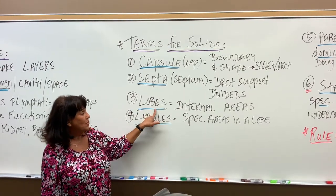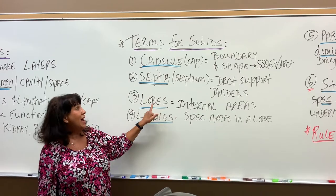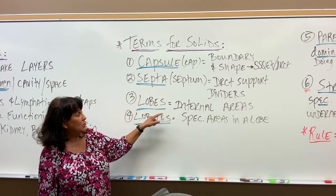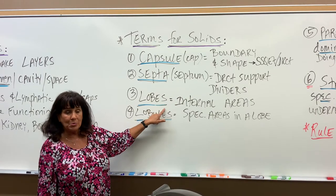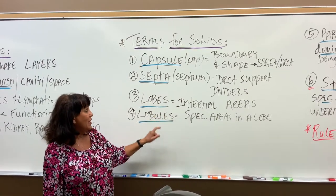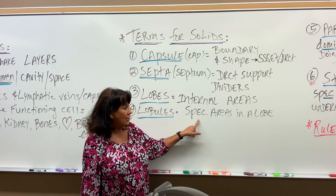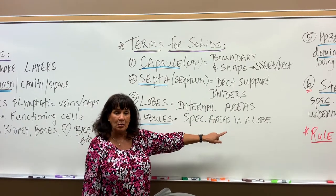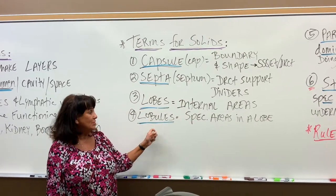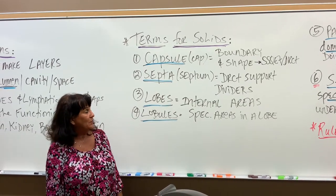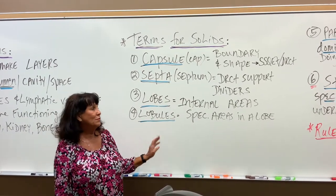Then we have internal areas called lobes. The septa are actually going to run on the inside and make lobes. Lobules are specific little areas inside a lobe — a very small, specific area. Not all organs have lobules, just a few.